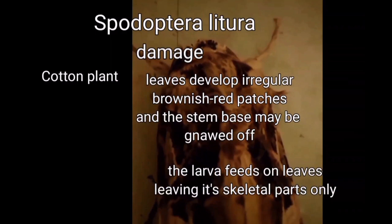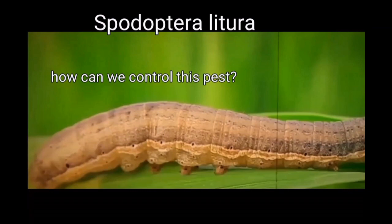You might wonder how we can control this important insect pest. Spodoptera litura is a serious pest, and the use of entomopathogenic nematodes (EPN) as a biological control agent is considered more effective for controlling Spodoptera litura.